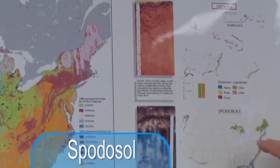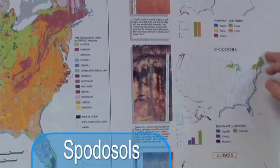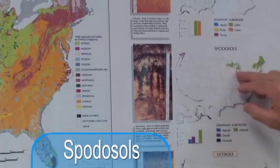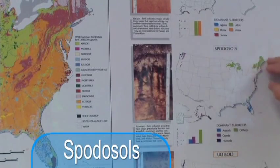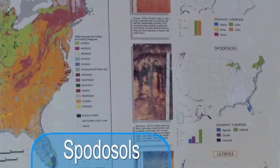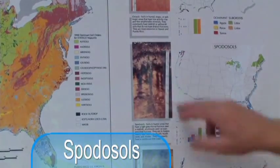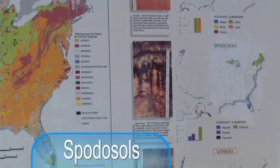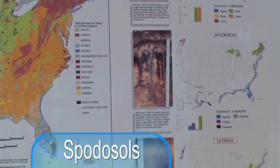The spodosols are the soils of the cooler regions that are humid. So it would be the northern part of Wisconsin, Michigan, and up into Maine. These are areas where very often there are organic matter accumulations, but the soils are poorly developed.